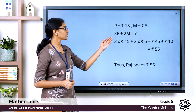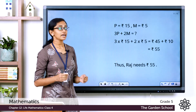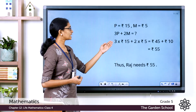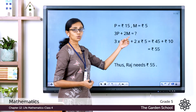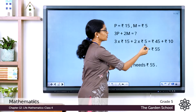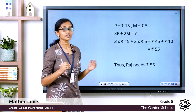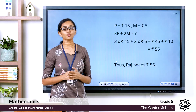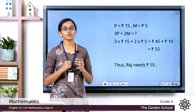We have to find the total amount needed to buy three pineapples and two mangoes. Substituting: 3 × 15 + 2 × 5 = rupees 45 + rupees 10 = rupees 55. So Raj needs a total of rupees 55 to buy three pineapples and two mangoes. We solved this question using the unitary method by finding the value of one unit of each item first.